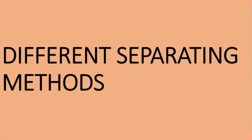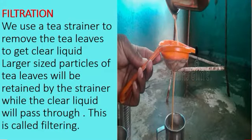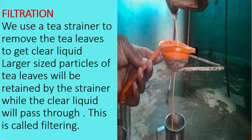Let us explore the different types of separating methods. Filtration: We use a strainer to remove the tea leaves to get the clear liquid. Larger size particles of tea leaves will be retained by the strainer while the clear liquid will pass through. This is called filtering.